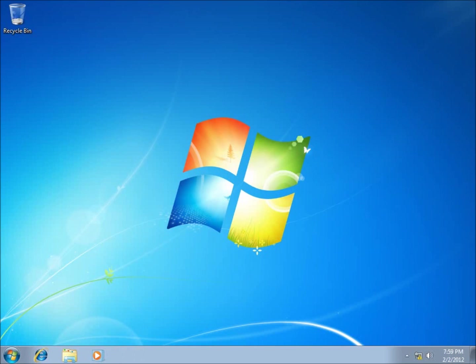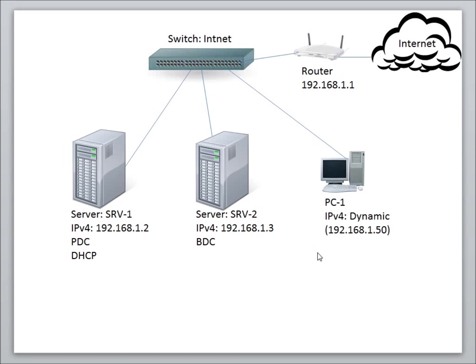It was successful. Returning back to the topology, I have a DHCP server, a backup server, and I've verified everything running on the client. When I booted up the client and looked at the IP configuration, I was able to communicate with the DHCP server, receive the first available IP address, and the computer is now up and running. This completes the lesson on setting up a DHCP server.